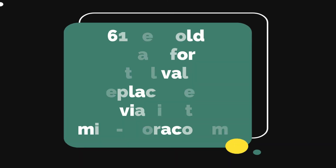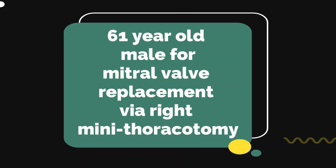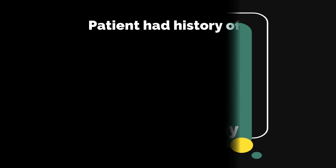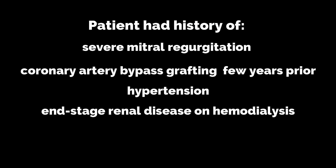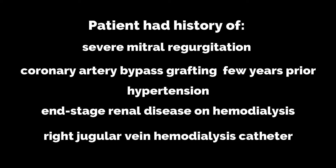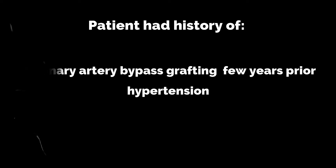This is a 61-year-old male patient for mitral valve replacement via a right mini thoracotomy. The patient had a history of severe mitral regurgitation, coronary artery bypass grafting a few years prior, hypertension, end-stage renal disease and hemodialysis, and had a right jugular vein hemodialysis catheter in place.